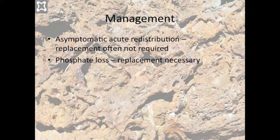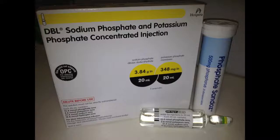In cases where total body phosphate is likely to be responsible, such as in DKA with renal losses, phosphate replacement becomes important. Treatment should aim to maintain phosphate levels greater than 0.8 millimoles per litre. Phosphate can be given IV or orally, though in practice it is given IV in most ICU patients.